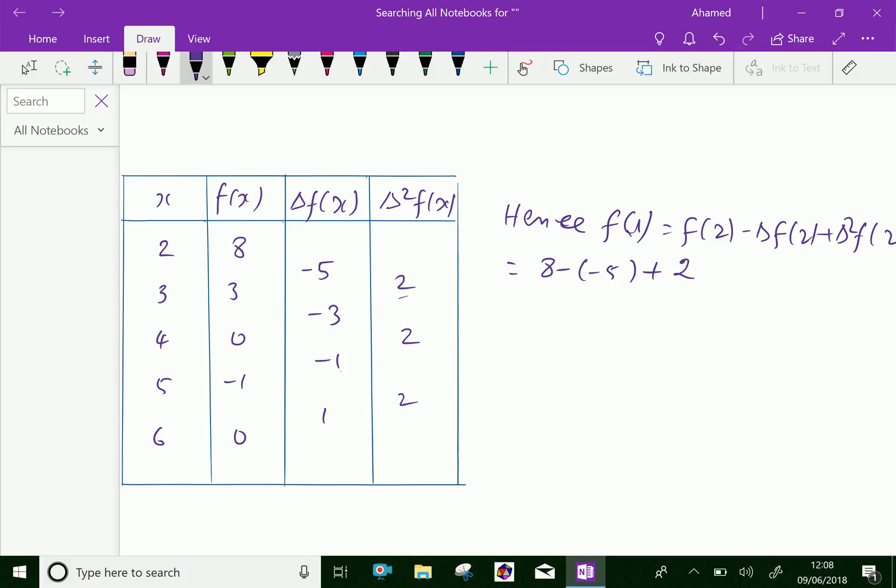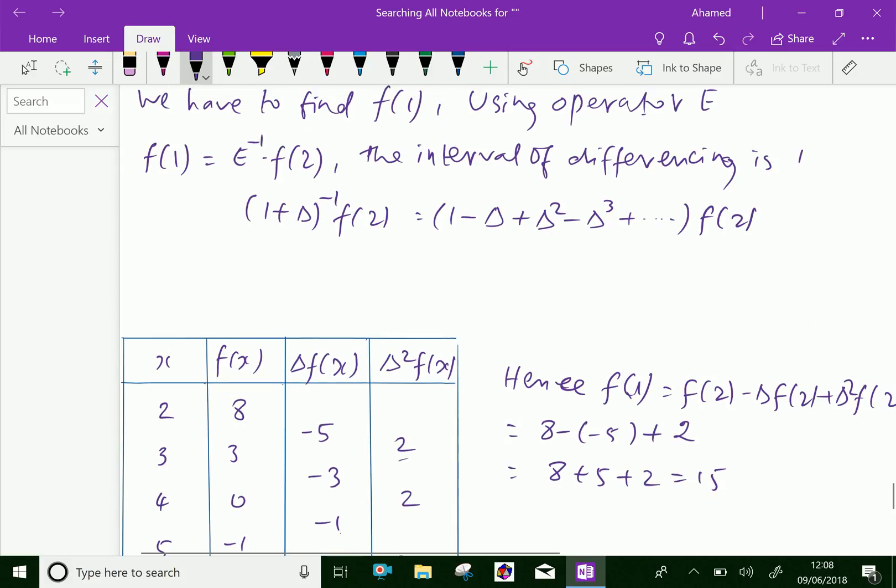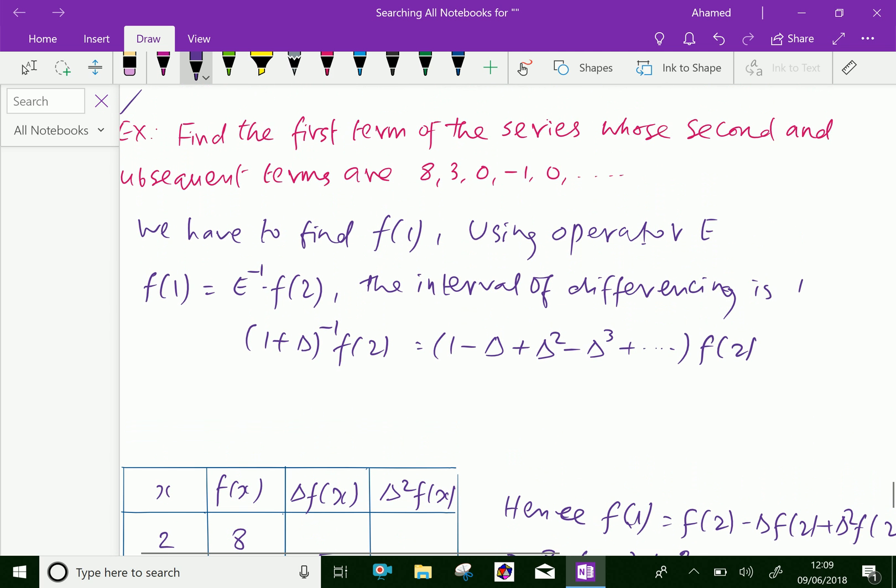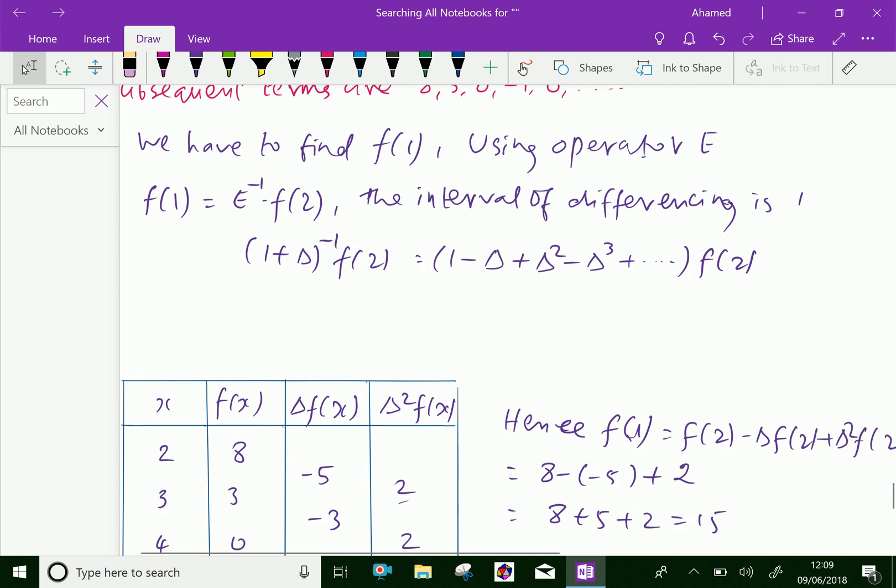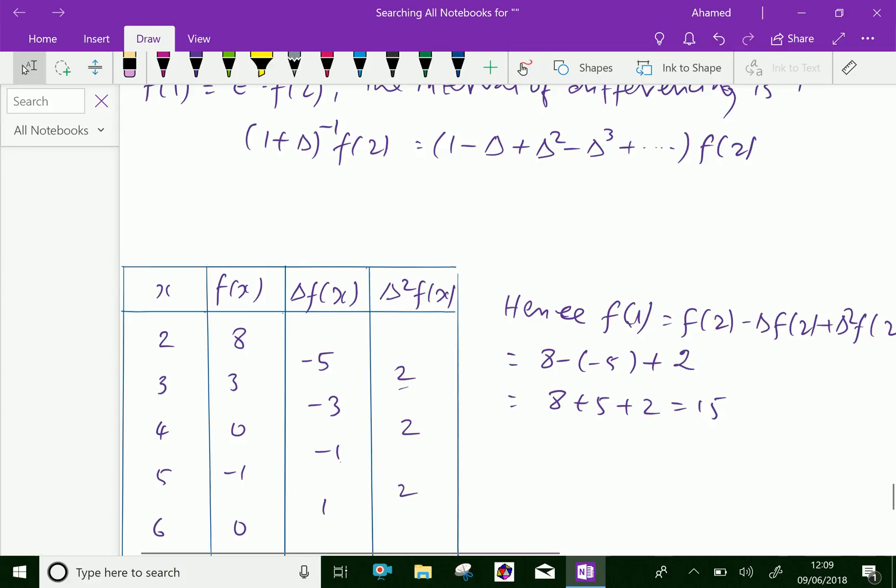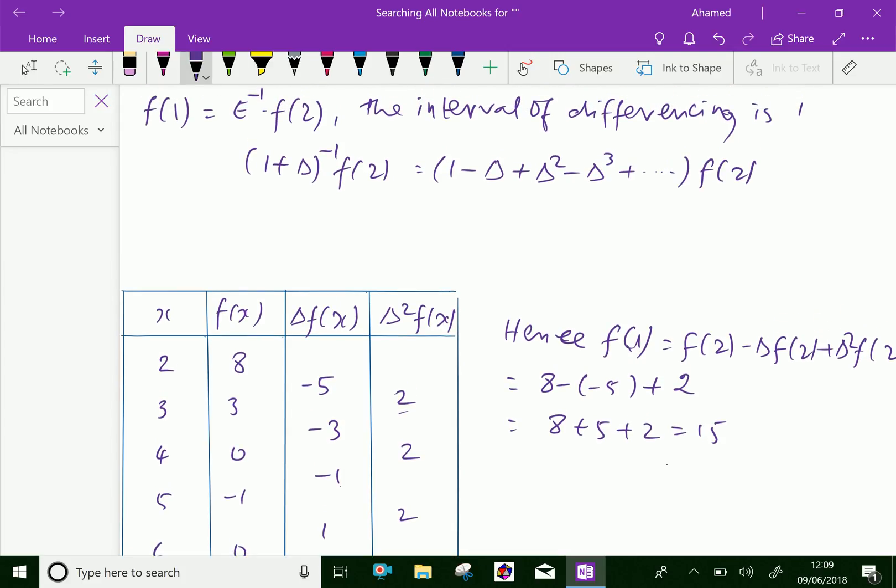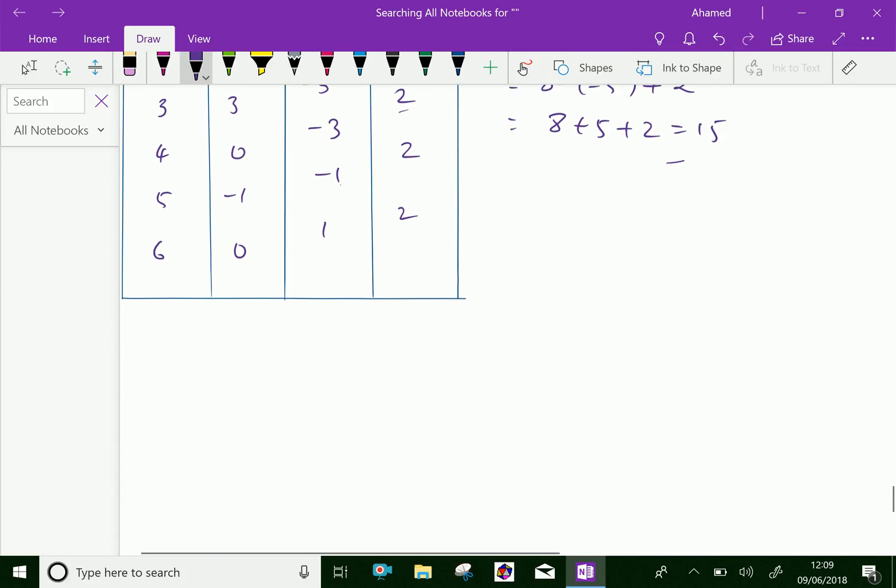Therefore we get 8 minus of minus 5 is plus 5, plus 2, which equals 15. We got the first term of the given series is 15. So we have done. Please subscribe to our YouTube channel.